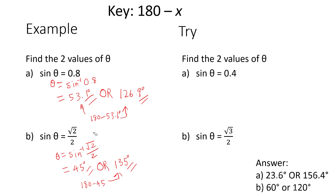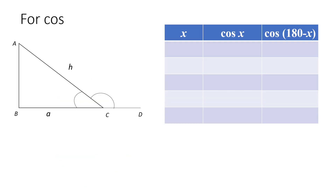We are done with sine — let's look at the obtuse angle for cosine. For cosine, it is adjacent over hypotenuse, so basically if I want to find the ratio it's just a over h. Let's say I have two angles: x and 180 minus x. Let's explore the values.